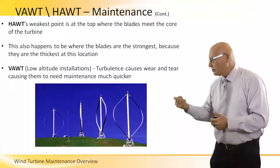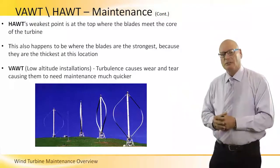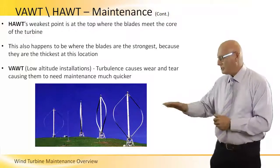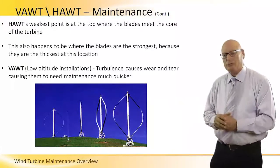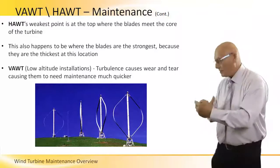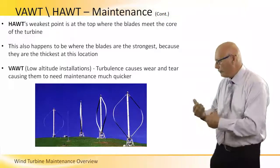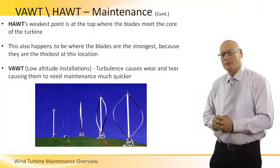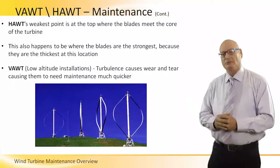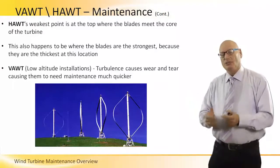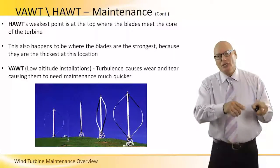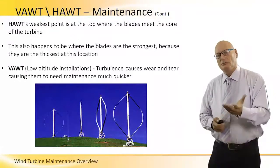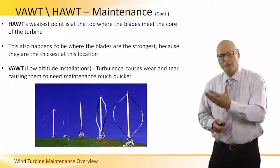In this picture, the Darrieus turbines shown are in low-altitude installations, placed on the ground. That means there are high levels of turbulence due to obstacles in the area, which causes wear and tear. The wear and tear of the HAWT is less than that of the VAWT in such conditions, which affects maintenance cost.